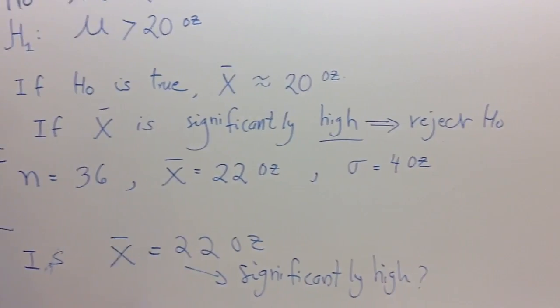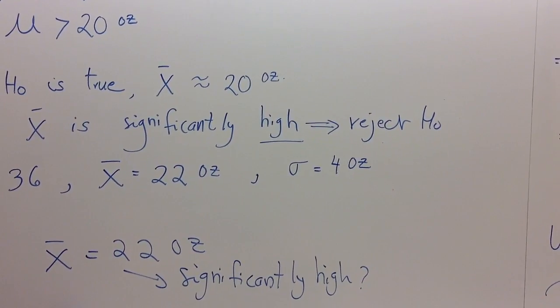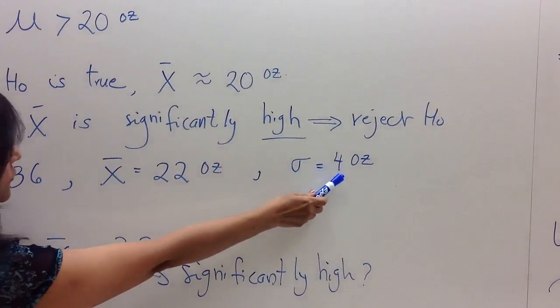So sigma, it is the population standard deviation. In this problem, it is known to be 4 ounces.